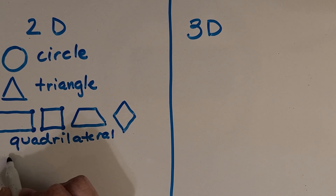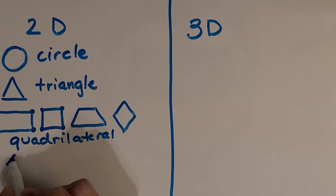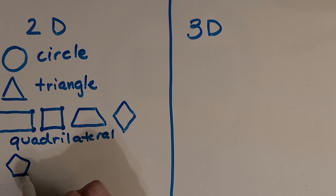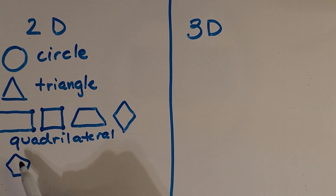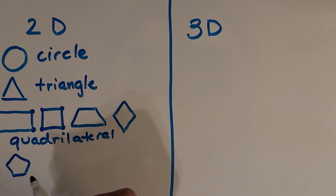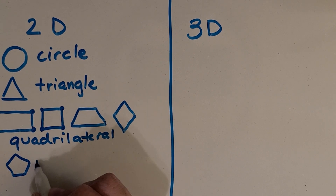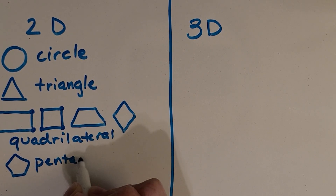What about this shape right here? I always think it looks a little bit like a house. How many sides does it have? One, two, three, four, five. It is called a pentagon.